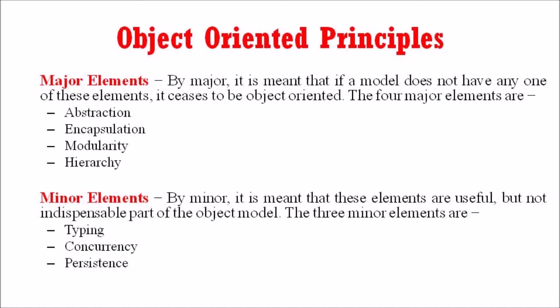The second category is minor elements. By minor, it is meant that these elements are useful but not indispensable parts of the object model. The three minor elements are typing, concurrency, and persistence.